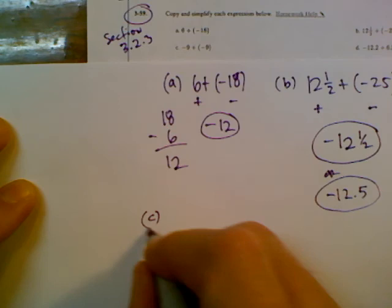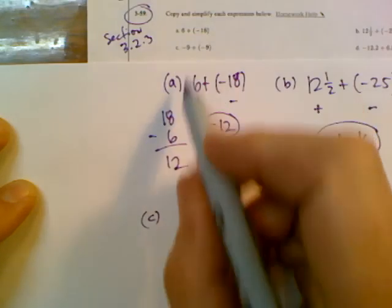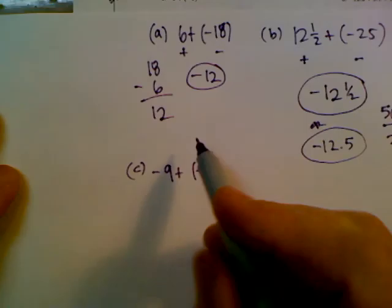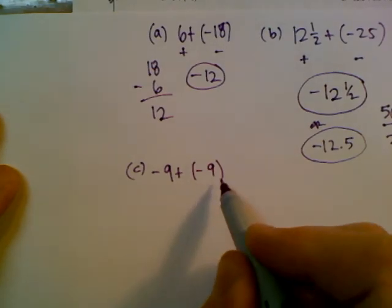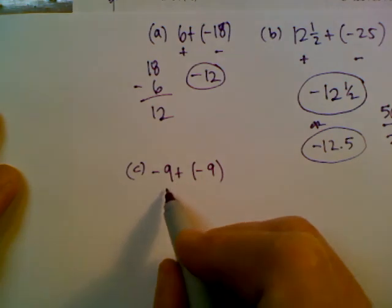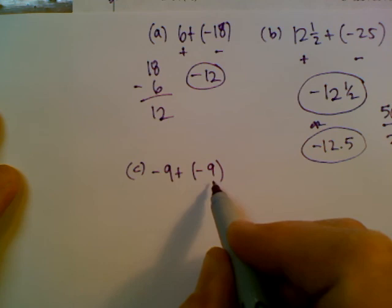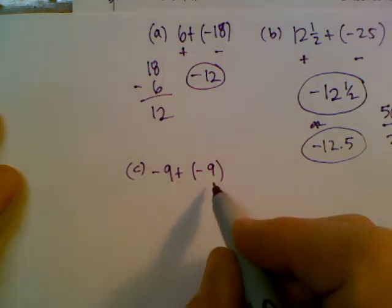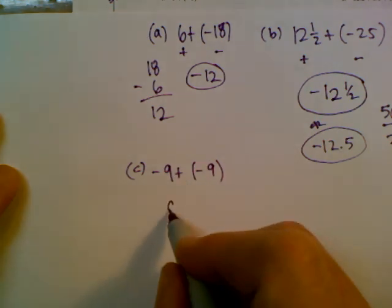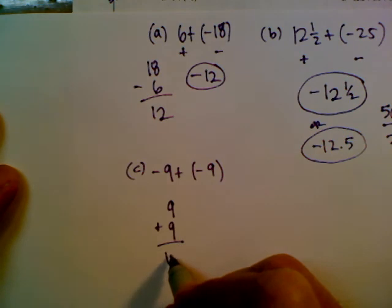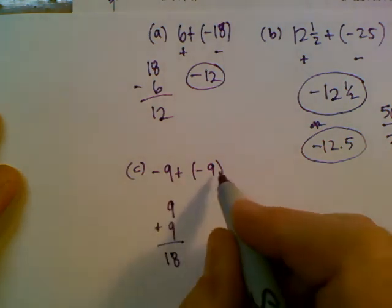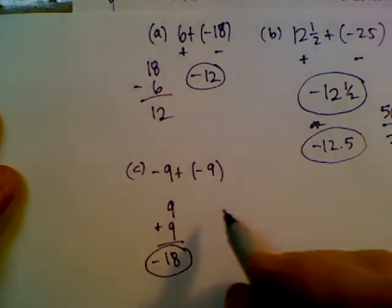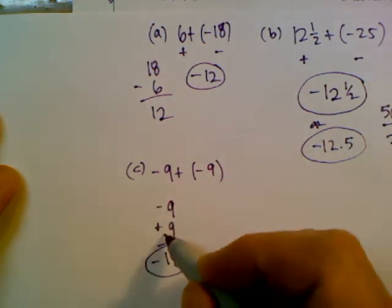All right. Let's look at C. C says negative 9 plus negative 9. So in this case, I'm adding two negative integers. I'm adding two negatives. So I've got nine negatives and another nine negatives. So when you're adding the same sign, in this case negatives plus negatives, I'm going to add the numbers. I just basically need to figure out what is 9 plus 9 and that's 18. And remember, it's negatives and negatives, nine negatives and nine negatives. So really, it's a negative 18 is the answer because I'm adding nine negatives with another nine negatives.